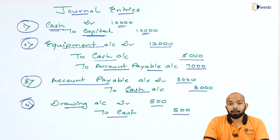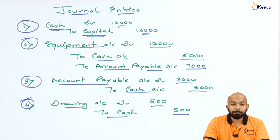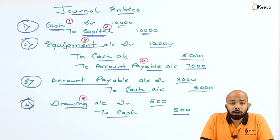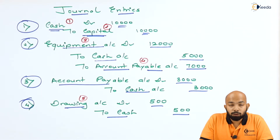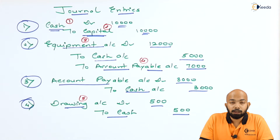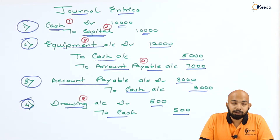Now we'll figure out how many account titles we have, and accordingly prepare the ledger accounts. There are five account titles: first, Cash; second, Capital; third, Equipment; fourth, Accounts Payable; and fifth, Drawings. We'll prepare account titles as per the format and then start posting journal entries.